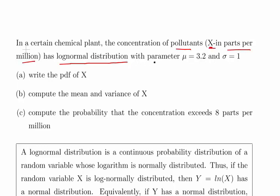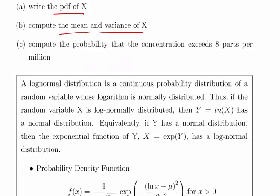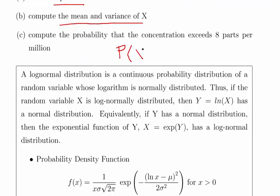has a log normal distribution with parameters mu equals 3.2 and sigma equals 1. That will correspond to the normal standard deviation. Now, write the pdf of x and compute the mean and variance of x and then compute the probability that the concentration exceeds 8 parts per million. Ok, so probability of x greater than or equal to 8.